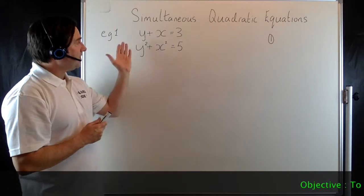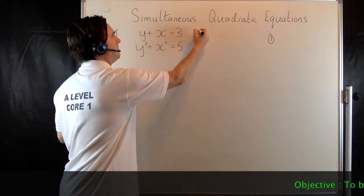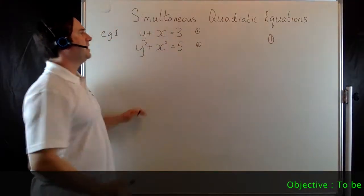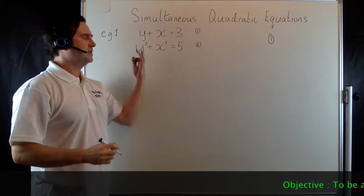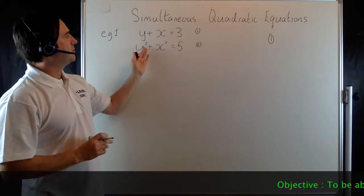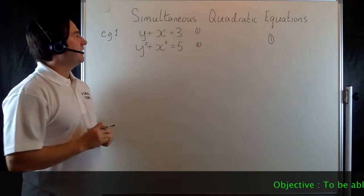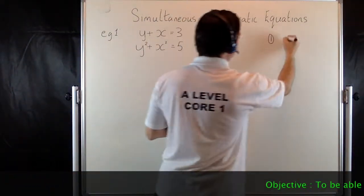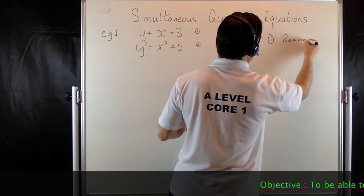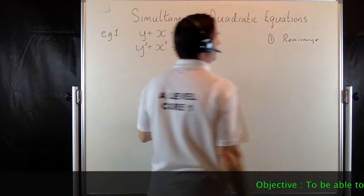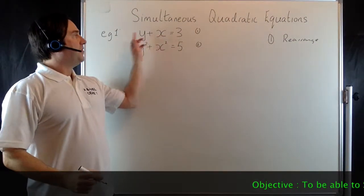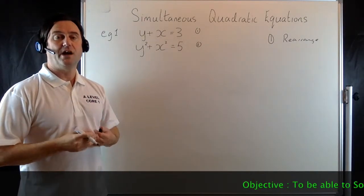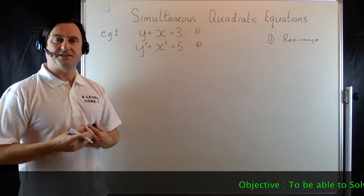So here we go, Example 1 then. We've got our two equations — let's label that one and that one two. The first one's linear. The second one here, well that's the equation of a circle, but it's got two squares in it.